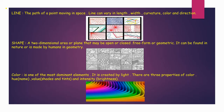Color is one of the most dominant elements. It is created by light. There are three properties of colour: Hue, which is the actual name; Value, which are the shades; and Intensity, which is the brightness or the dullness of any colour.